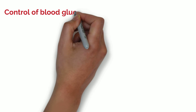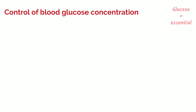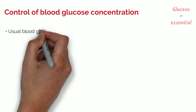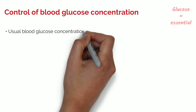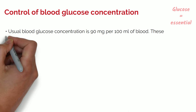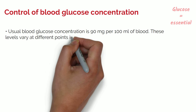Firstly, the control of blood glucose concentration. As covered in the previous topic of respiration, glucose is essential for all cells to have energy to work. The usual blood glucose concentration is 90 milligrams per 100 millilitres of blood, and these levels vary at different points in the day.